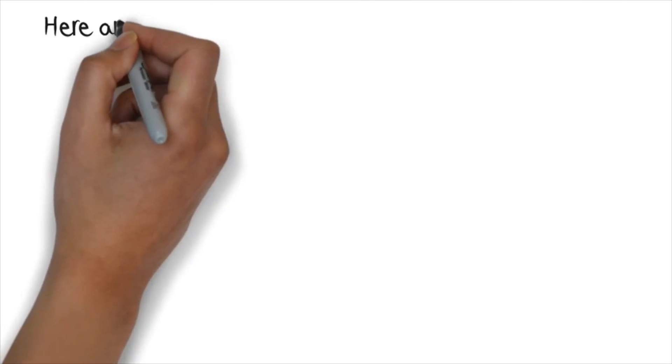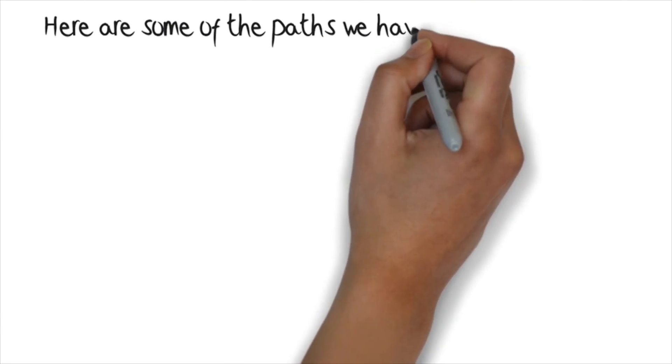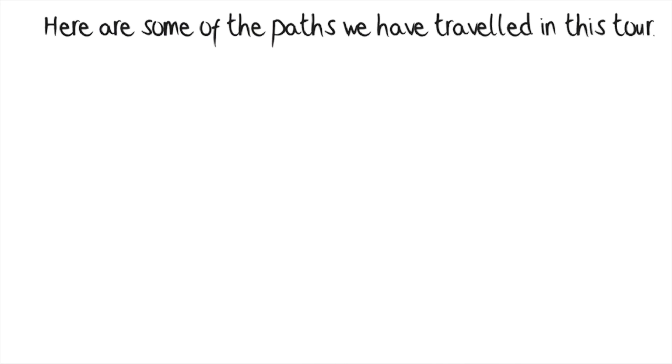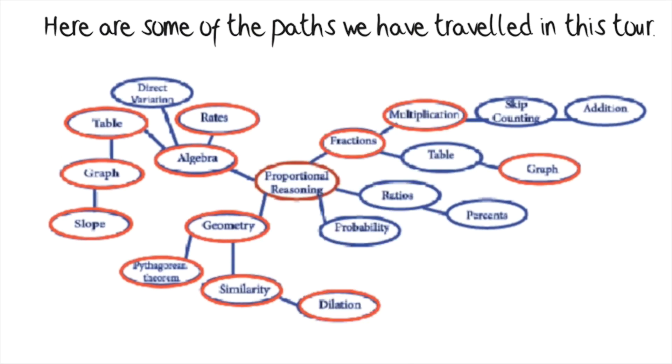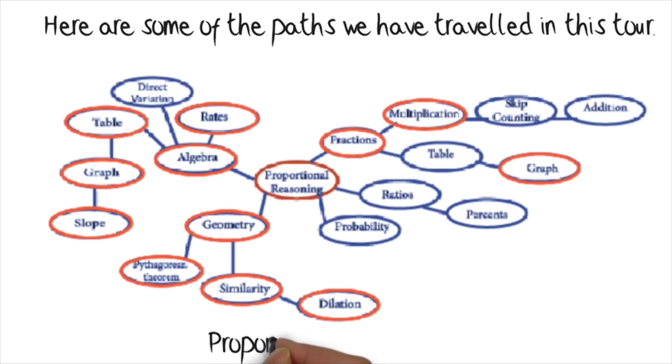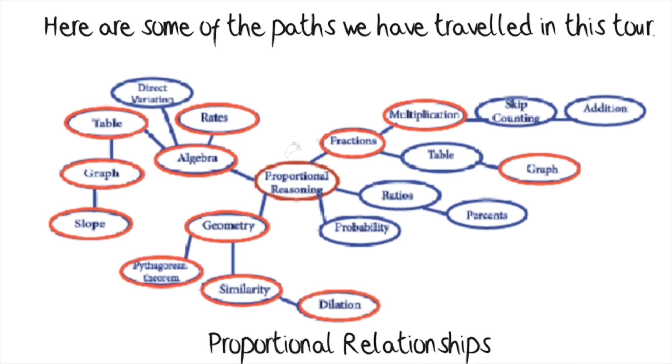So here's some of the paths we've travelled in this tour. We've made a little concept map, and it shows you all these areas of mathematics. And when we thought about proportional relationships, we started off with fractions. We made a table. We drew graphs. We then took it into geometry and transformational geometry. We looked at dilation. Then we talked about algebra, and we thought about slope.